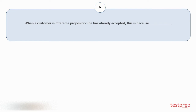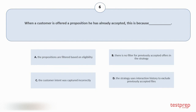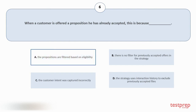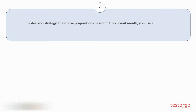Question number six: When a customer is offered a proposition they have already accepted, this is because — your options are: A) the propositions are filtered based on eligibility; B) there is no filter for previously accepted offers in the strategy; C) the customer intent was captured incorrectly; D) the strategy uses interaction history to exclude previously accepted offers. The correct answer is option A.